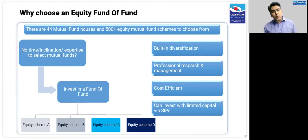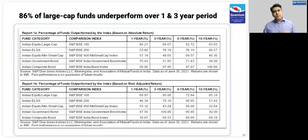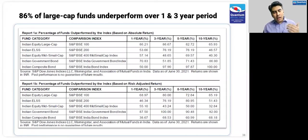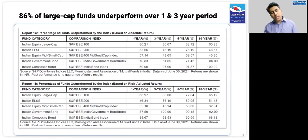That is where the equity fund of funds comes in handy — you don't have to worry about which fund to get in or get out; a professional manager does that for you. Over the last one to three years, many fund managers were underperforming. Last one year, 86% of fund managers underperformed the BSE 100 index. Even on three years, the number is the same — about 86%. Over five years, about 82% of fund managers underperformed the index. The reason is there has been a big polarization in the market, and diversified portfolios have not done well.